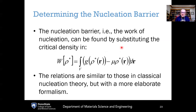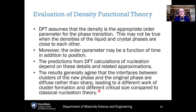Once we determine rho*, the next step is to take that critical density fluctuation and put it back into the work function. Solving that integral gives the Gibbs free energy associated with forming the nucleus with that critical density fluctuation rho*—this is the work of forming the nucleus with that particular critical density. It is analogous to what we did before, but every place where we had r* we now have rho*, and the mathematics gets a lot more complicated because we use variational calculus rather than simple integrals as we did before.